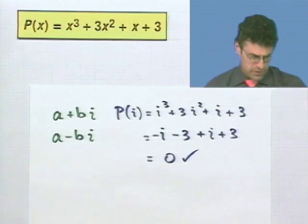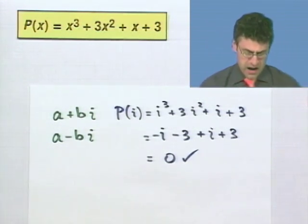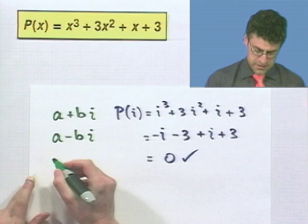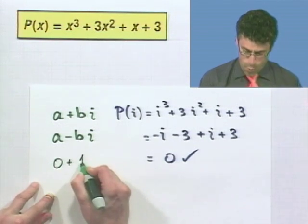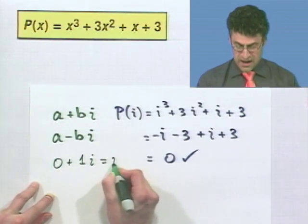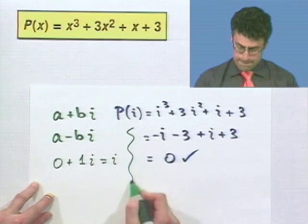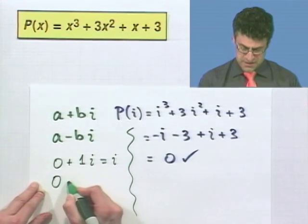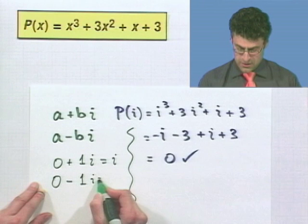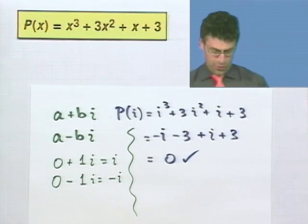Technically, if you want to see the details of that one little teeny step, I'd write i as 0 plus 1i. That's just i. And so what would the conjugate be? It'd be 0 minus 1i, which equals negative i. Okay, cool.